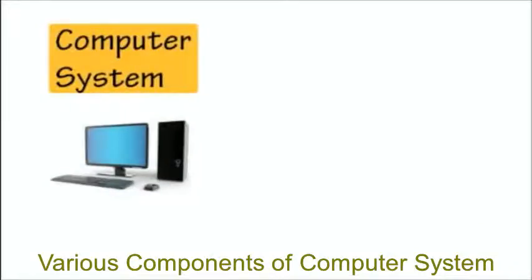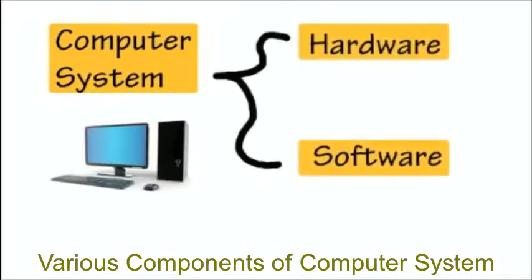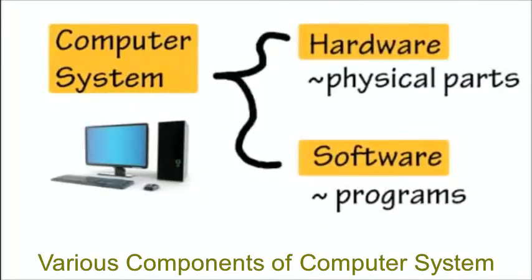The most basic division of a computer system is between the hardware and the software. Hardware is often described as the physical parts of a computer that you can actually touch with your hands, although that is not recommended, especially when the power is on.